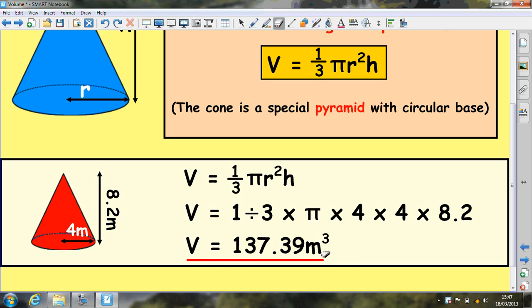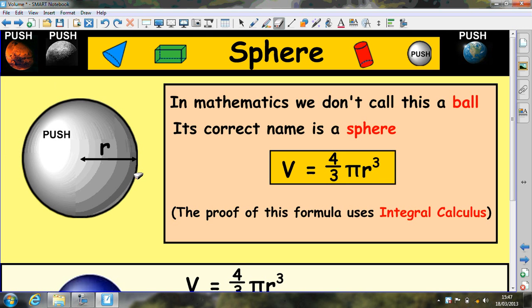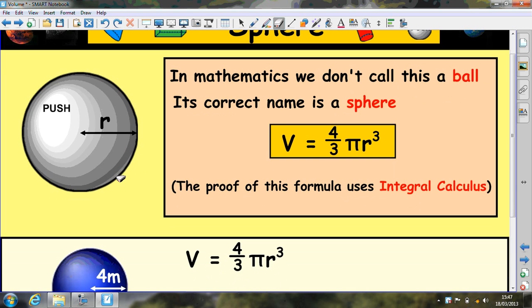For the sphere, V equals 4/3 pi r cubed. This is not a circle, it's a sphere like a ball shape. It's important to copy these formulas down correctly.